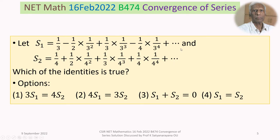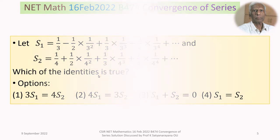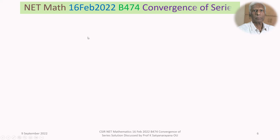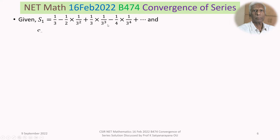We discuss the solution of this problem in detail. We are given S1 as the first series and S2 as the second series. The first series S1 is 1/3 minus 1/2 times (1/3)² plus 1/3 times (1/3)³ minus 1/4 times (1/3)⁴, plus so on and so forth.